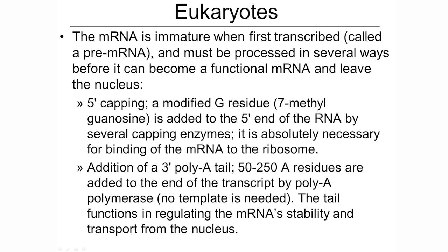In eukaryotes, on the other hand, the mRNA is immature when it's first transcribed and it's inside of the nucleus, so it's often referred to as a pre-mRNA during this time. It's going to have to be processed in several ways before it can become a functional messenger RNA and leave the nucleus. This mRNA is a lot different than the bacterial counterpart.